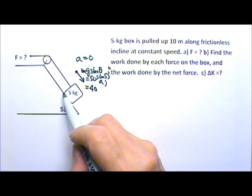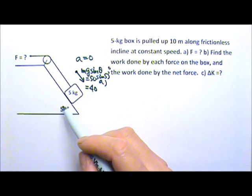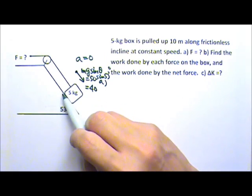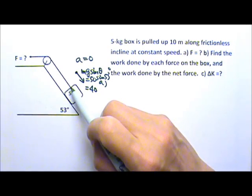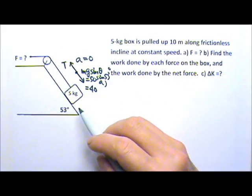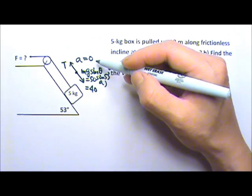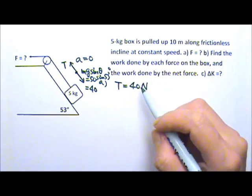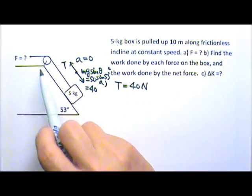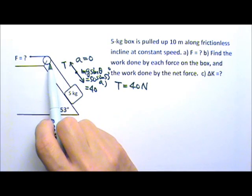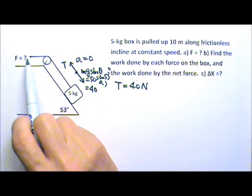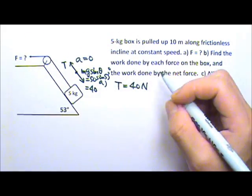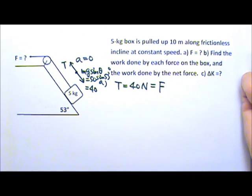The box is touching the contact surface, which gives a normal force perpendicular to the incline and friction — but since the incline is frictionless, the contact surface gives no force along the incline. The box is also touching the string, so there's tension pulling up the incline. Since acceleration is zero, tension equals 40 newtons. Because it's the same string, the tension throughout is 40 N, so the pulling force F must also be 40 newtons.